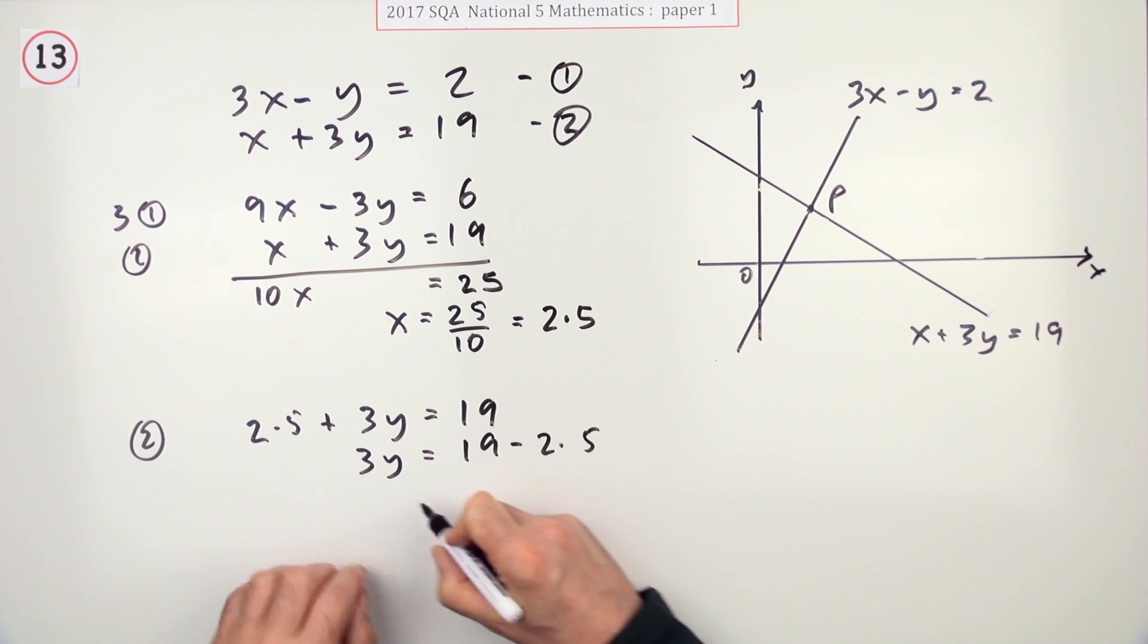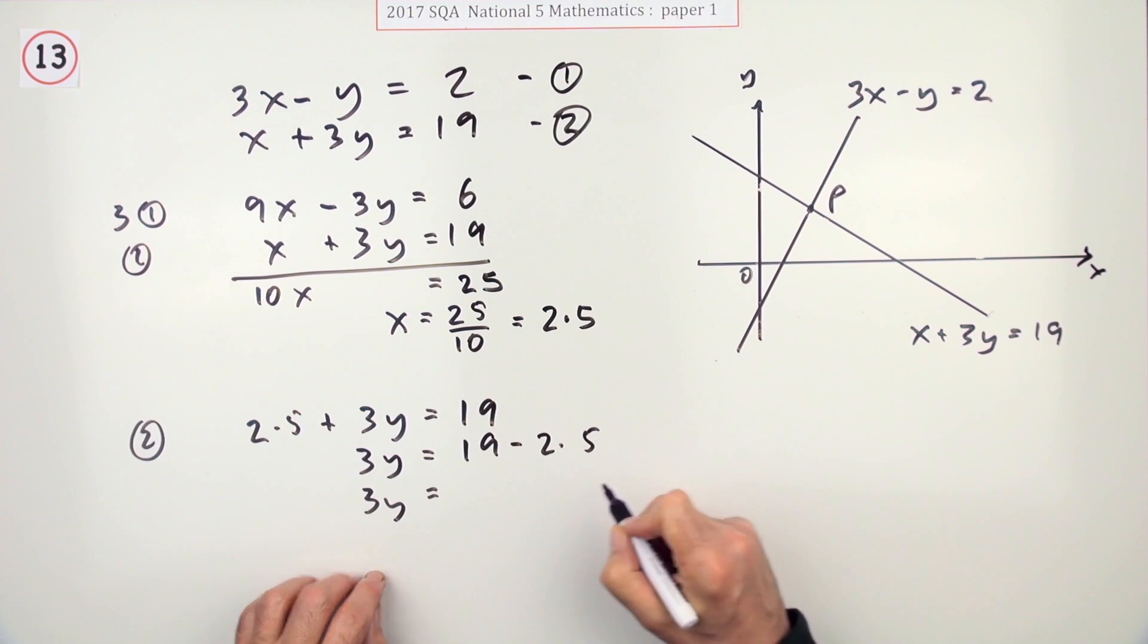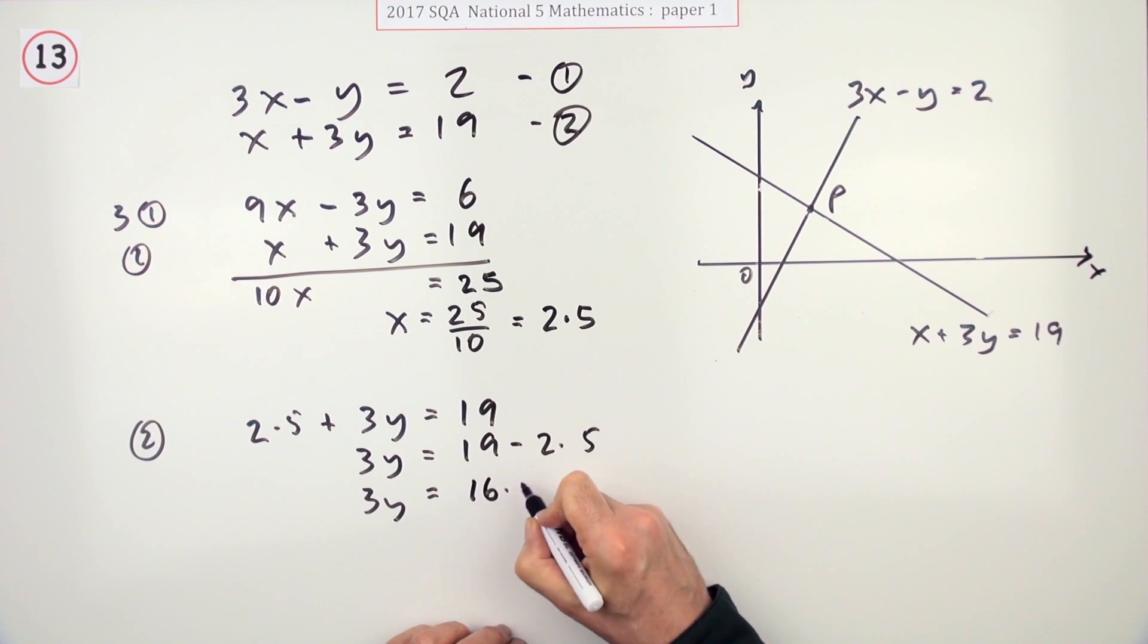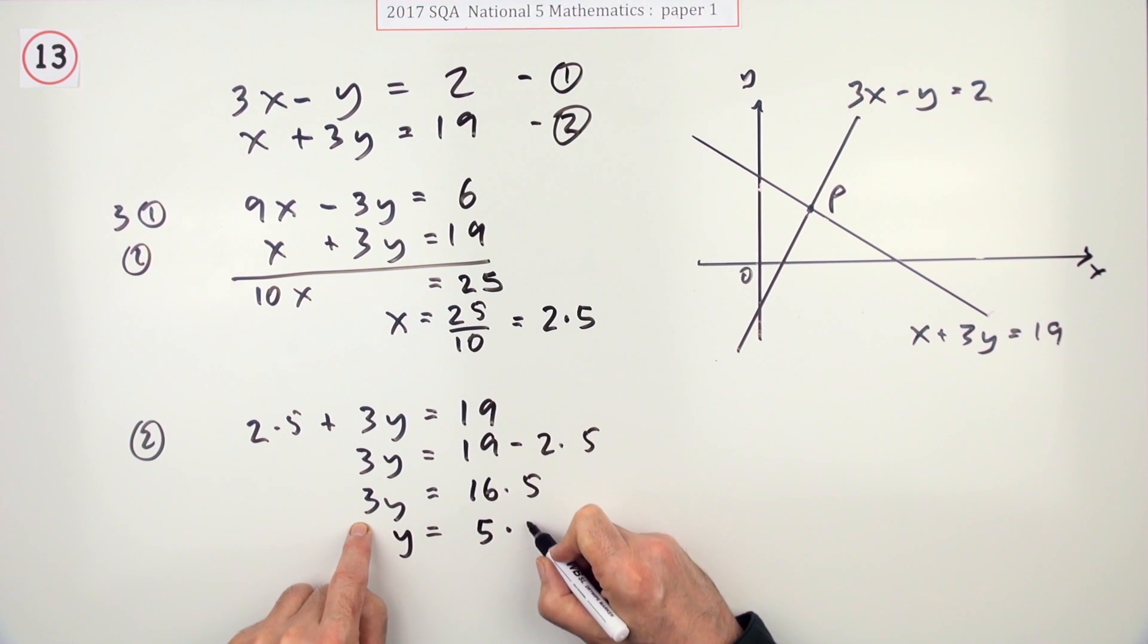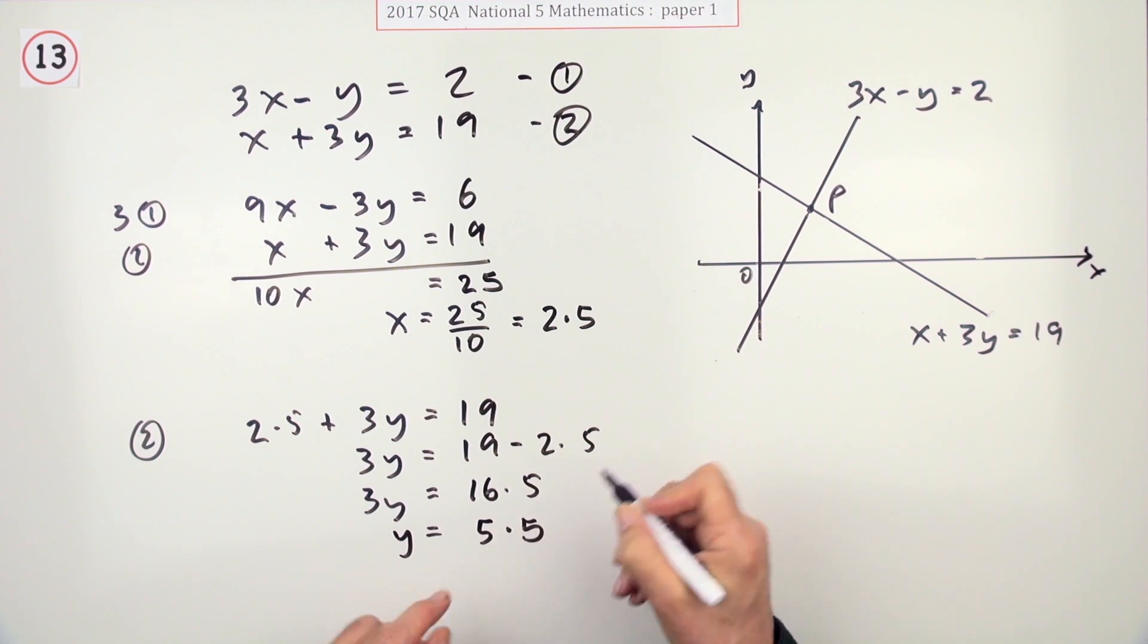minus the 2.5. So that's going to be 16.5. So y is going to be that divided by 3. So 3 into 16 goes 5 and 1 over. 3 into 15 goes 5 again.